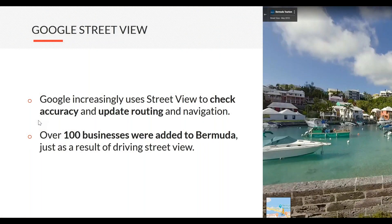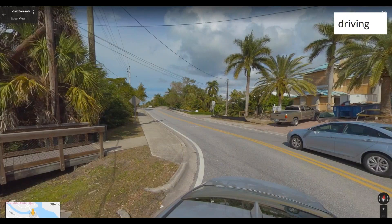Google is increasingly using this data to do things like fix directions and find out when roads are closed or turn into one-ways. In the Bermuda shoot we did last year, we shot pretty much the entire island with brand new Street View, and that footage alone generated 100 new businesses added to Maps that weren't there before. Those were added on the backend by Google servers looking at that Street View data. So there are really compelling backend reasons, aside from the front-end reasons, for destinations to invest in Street View.